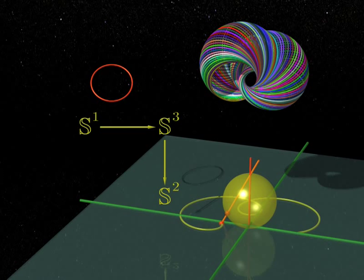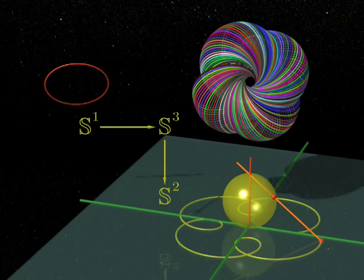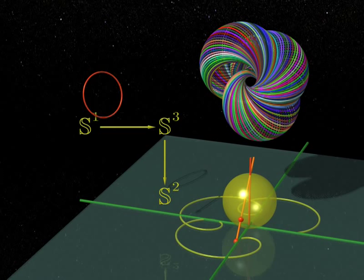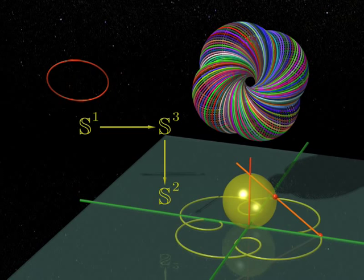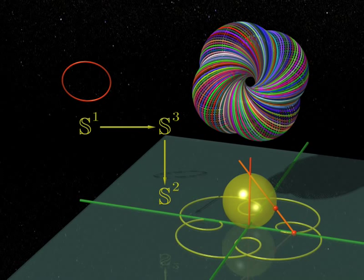Complicated, isn't it? Mathematicians say that above any point of the base S2, there is a fibre which is a circle S1, and that the total space of this fibration is the sphere S3. I am very proud of my fibration, all the more so because it has become a fundamental object in topology.